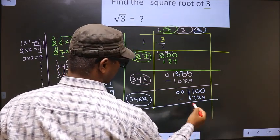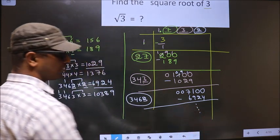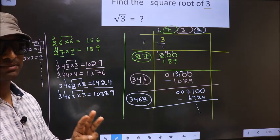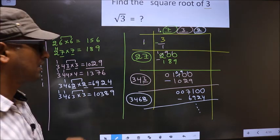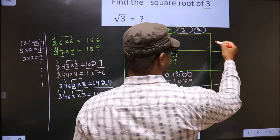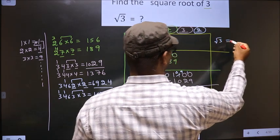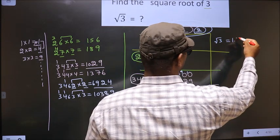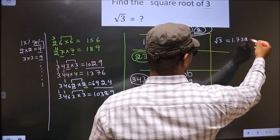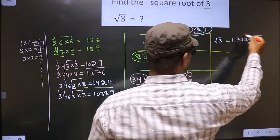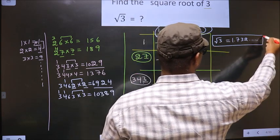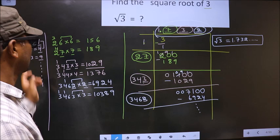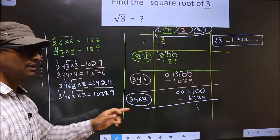Now we subtract and it goes on. It is enough if we take up to 3 decimal places. The square root of 3 is 1.732 and it goes on. This is our answer.